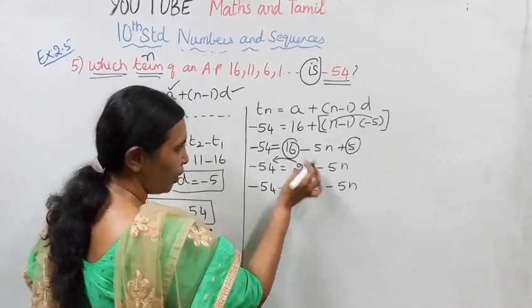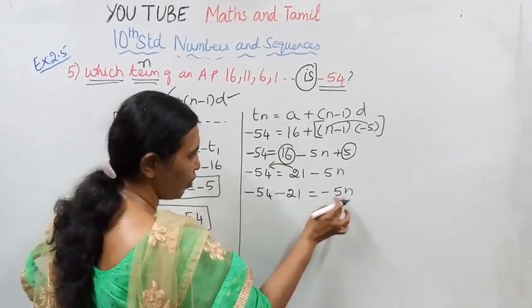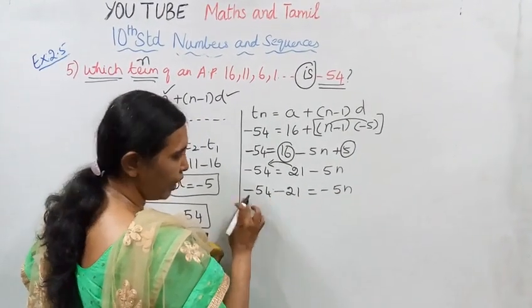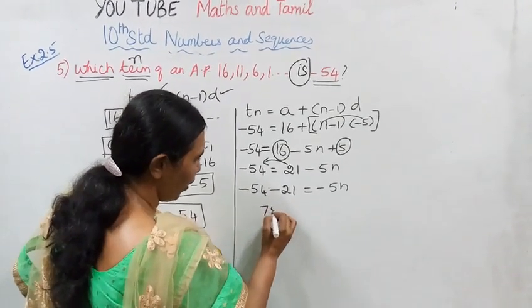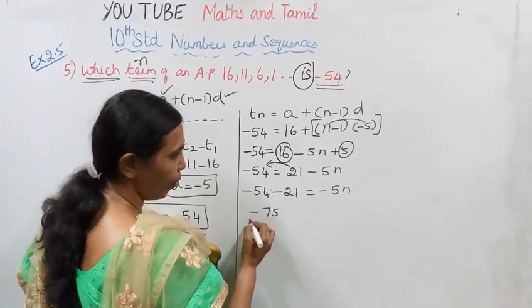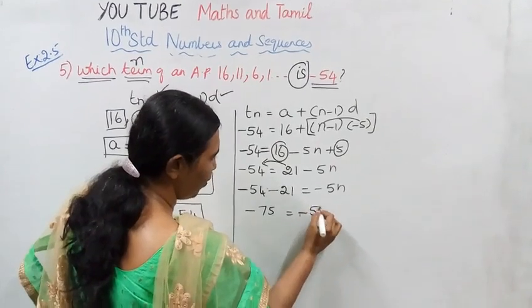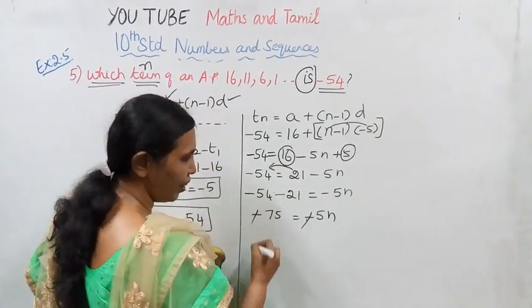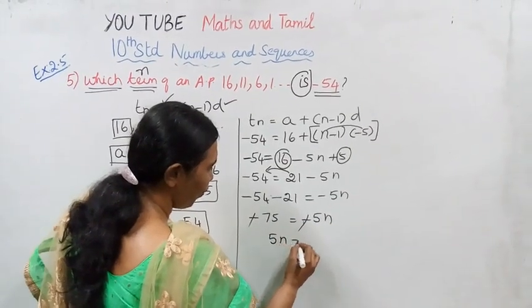Apply left-hand side. Bring plus 21 to left-hand side. Minus 21. Minus 75 equal to minus 5N.